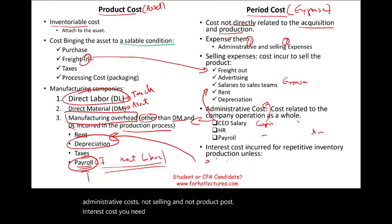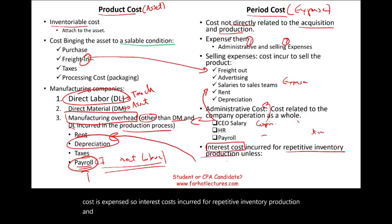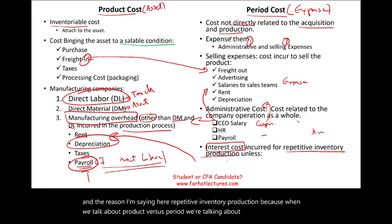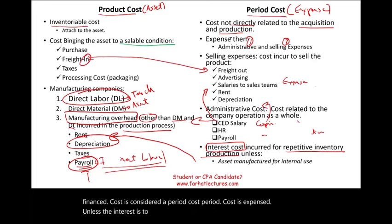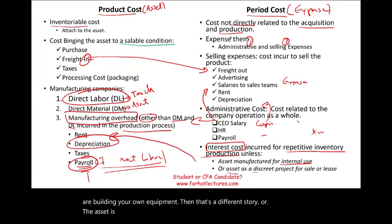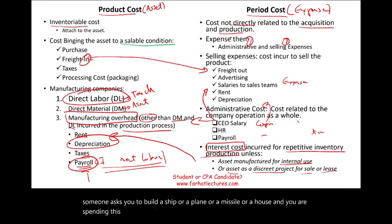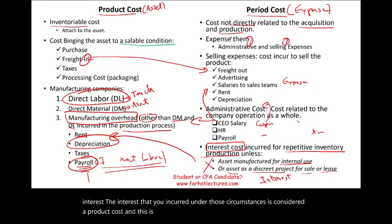Interest cost is a form of financing and is generally expensed as a period cost. For repetitive inventory production, if you borrow money to mass-produce something, the interest is a financing cost treated as a period cost. However, if the interest is to manufacture an asset for internal use, or to build a discrete asset for sale or lease — such as a ship, a plane, or a house — then the interest incurred under those circumstances is considered a product cost. This falls under the topic of capitalized interest.